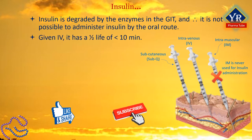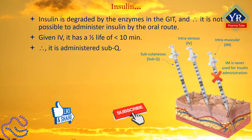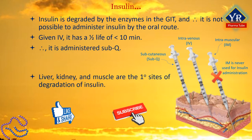Given intravenously, it has a half-life of less than 10 minutes, i.e., a shorter duration of action. Therefore, it is administered subcutaneously. Long-term treatment relies on the subcutaneous injection of insulin, though it may be administered intravenously or intramuscularly when necessary. Its half-life in plasma is about five to six minutes in normal and uncomplicated diabetic subjects. Liver, kidney and muscle are the primary sites of degradation of insulin.